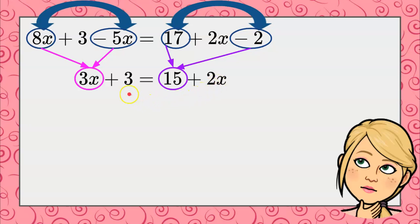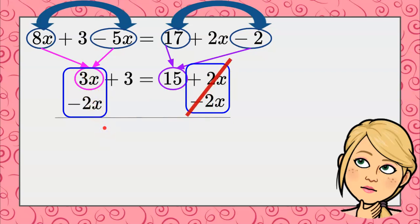Now, the next step is I want to collect variable terms. I have variables on both sides of the equation, so I am going to collect them using inverse operations and subtract 2x from both sides. This creates a zero pair on the right, and 3x subtract 2x is just x.